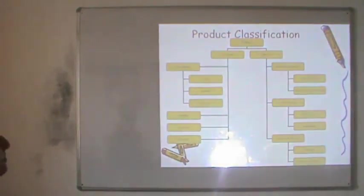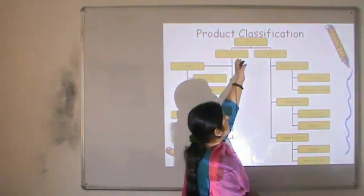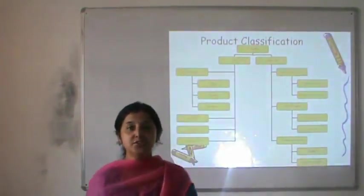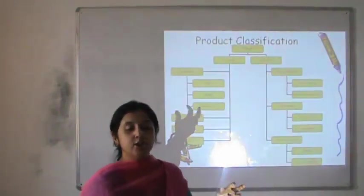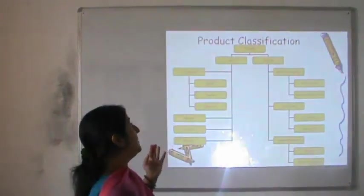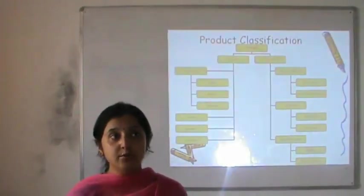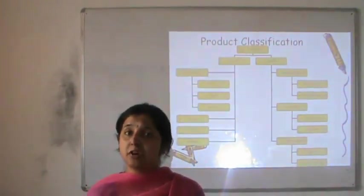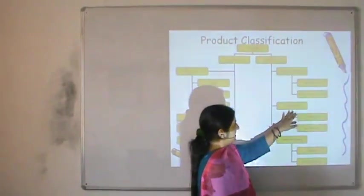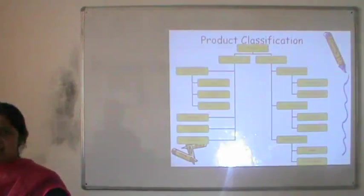All products in the market can be divided into two categories: consumer products and industrial products, based on the end user. If a product is used by the end consumer for personal or household use, it is a consumer product. If it is bought for resale or for use in further production processes, it is an industrial good. Industrial goods can be classified into materials and parts, capital items like machinery and installation, and supplies and services.